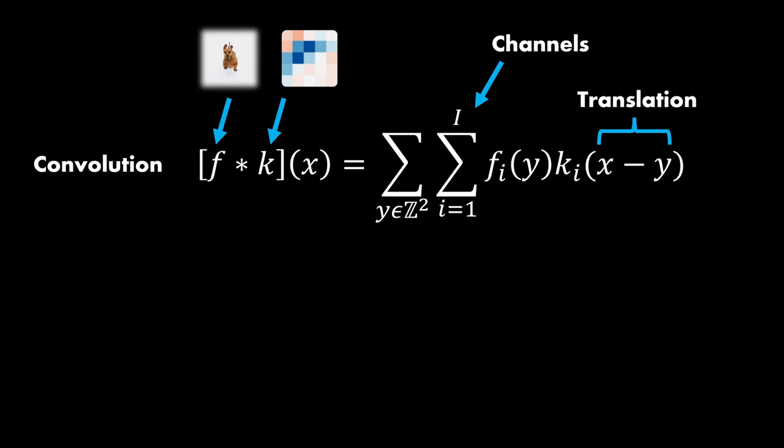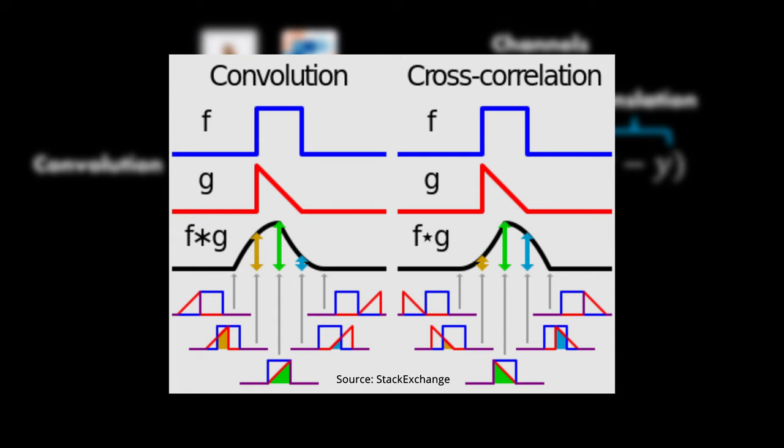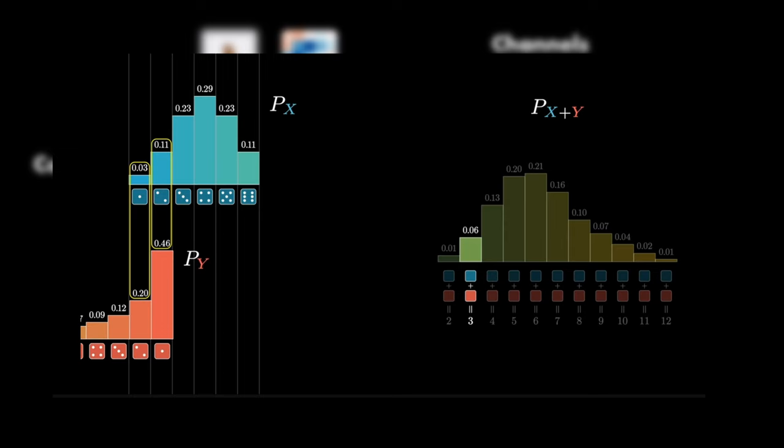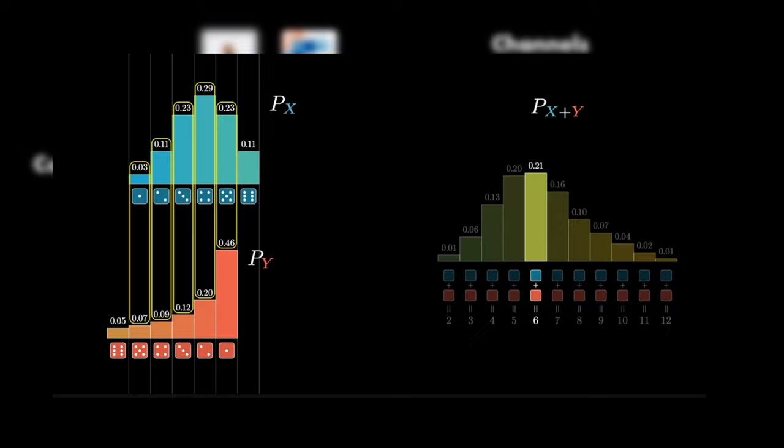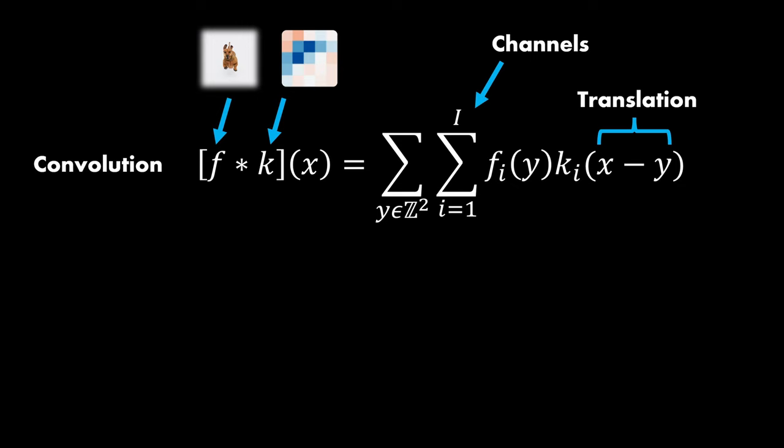In signal processing, you will find a slight distinction between convolution and cross-correlation. Convolutions additionally flip the filter before applying the signal. This is also nicely visualized in a recent 3blue1brown video, linked in the video description. In our deep learning setup, it doesn't make a difference however, as the filters are anyways learned by the model.